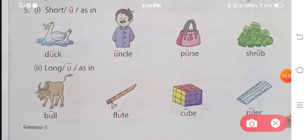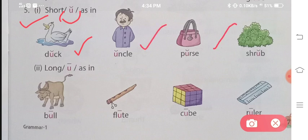This is the last point. Five. Here we will talk about U, the sound of U. U also has two sounds. One is your short sound, the other is your long sound. First we will talk about the short sound. Duck. Duck. Uncle. Uncle. Purse. Purse. Shrub. Shrub. These are the sounds in which the U sound was very short.